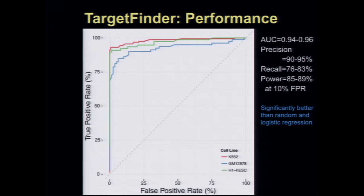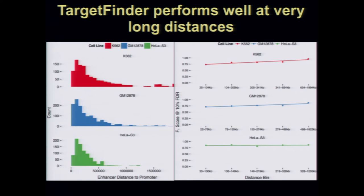When Sean Wieland, the postdoc in my lab, showed this to me, I thought maybe this was a mistake. We resolved that there was no bleeding between cross-validation sets. Then I thought maybe these features were just encoding how far away the enhancer is from the promoter, because at short ranges like 10 to 20 kilobases, there is a higher chance an enhancer is interacting with a promoter. But it turns out there is no dependence on performance based on distance. If anything, we do a little bit better the further away the enhancer is from the promoter, even up to two million base pairs away.